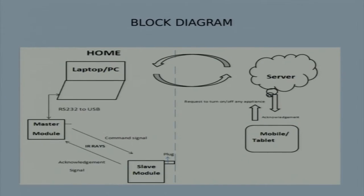The master module sends commands to the slave, and the slave sends an acknowledgement indicating whether the appliance is turned on or off. The communication between master and slave is through infrared. Wireless communications typically use digital modulations, so PWM is used for communication. The master sends frames of data following a protocol similar to the RC5 protocol, and the acknowledgement travels in the reverse direction.